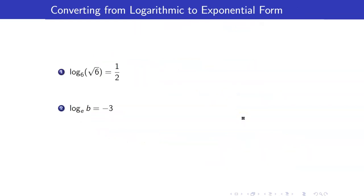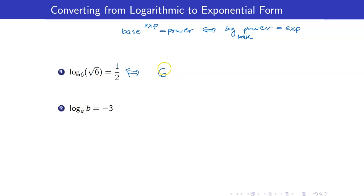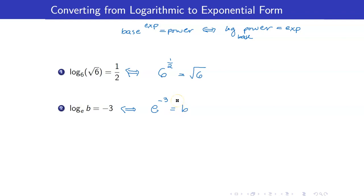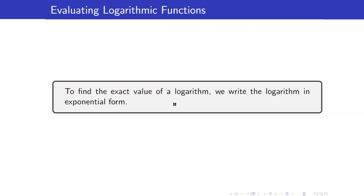Next, we will convert from logarithmic to exponential form. Again, we will still make use of the same guide. What is our base here? Our base here is 6, here is our exponent 1 half, and the power is square root of 6. Next, the base here is e, the exponent is negative 3, and the power is equal to b. Let us now evaluate logarithmic expressions. To find the exact value of a logarithm, we just write the logarithm in exponential form.